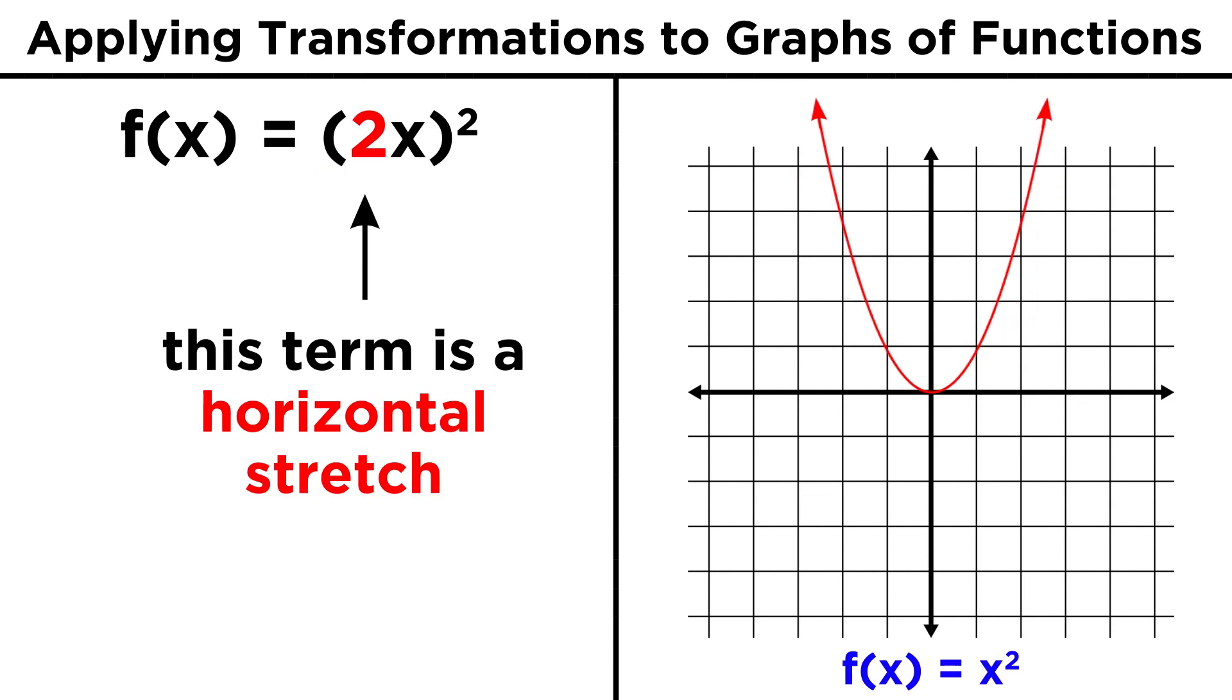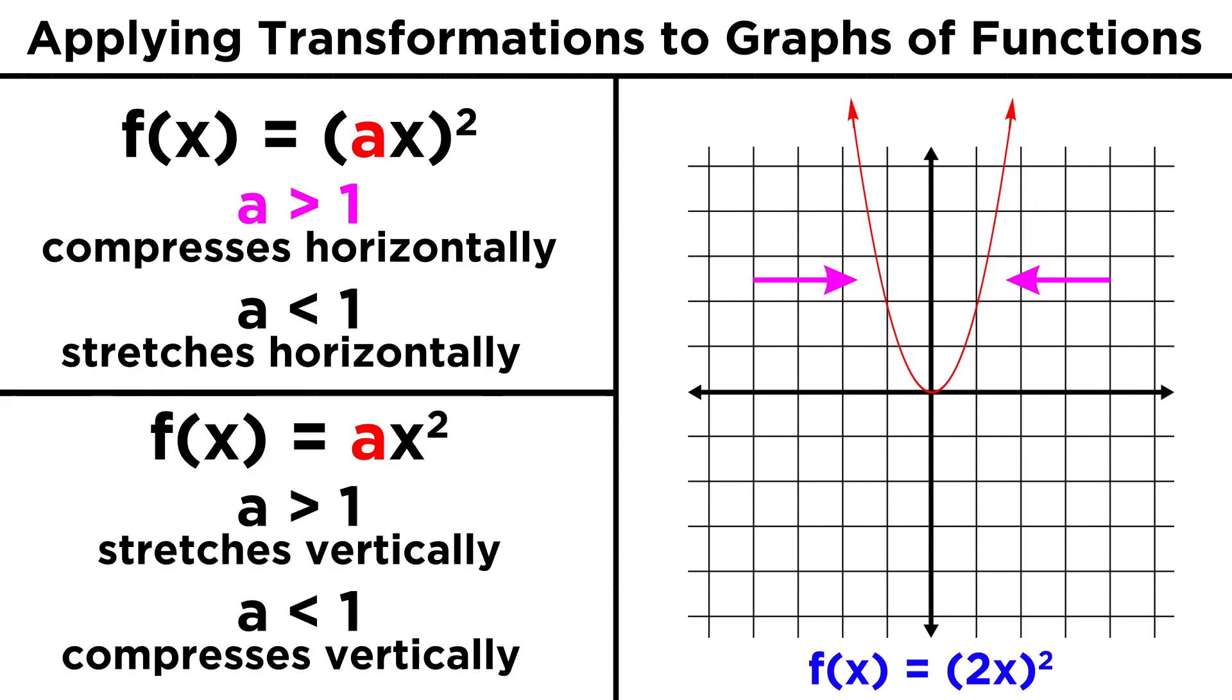If instead there is a coefficient inside this term, like two x quantity squared, we will get a horizontal stretch. This will be different from the vertical stretch in that if the coefficient is greater than one, it will shrink horizontally this way, and if it is less than one, the function will stretch this way.